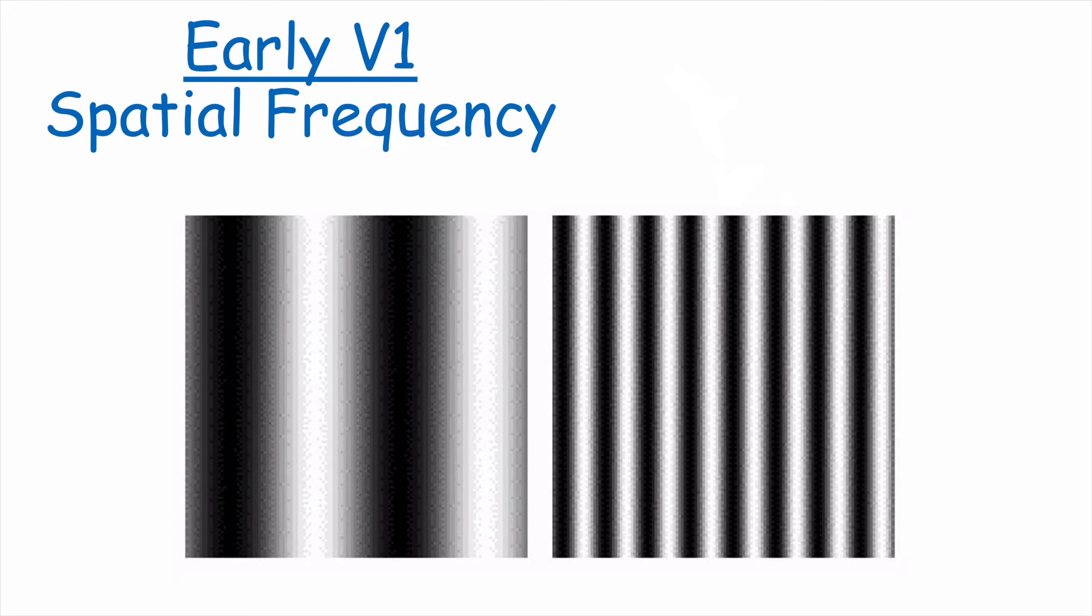Neurons in the primary visual cortex are also sensitive to spatial frequency. Here you see a low spatial frequency on the left and a high spatial frequency on the right.